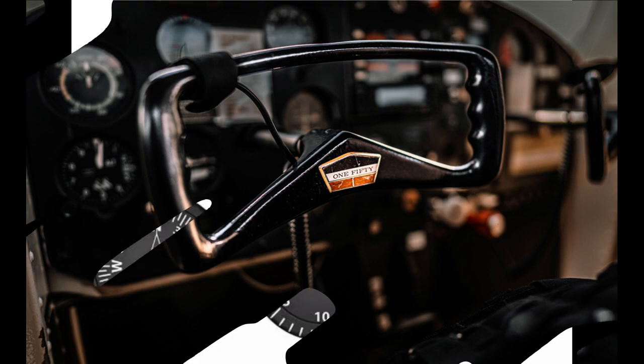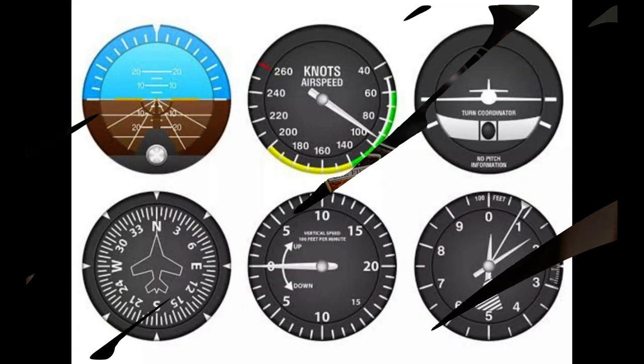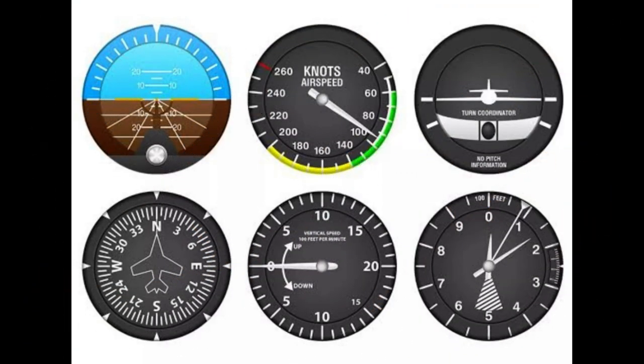What are the six basic instruments on an aircraft? The pilot can quickly check the six-pack to get the most recent data on the speed, altitude, climb, descent, attitude, heading, and turning banking of the aircraft.